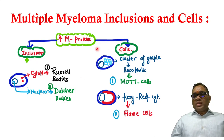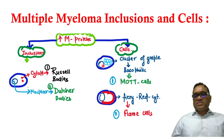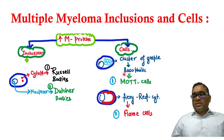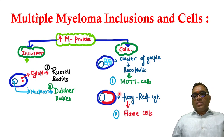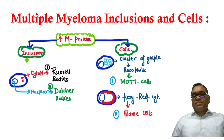When M proteins accumulate in the cytoplasm of the plasma cell as a cluster of grapes and appear basophilic, that is called a Mott cell. When M protein accumulation has a fiery red appearance, that is called a flame cell.